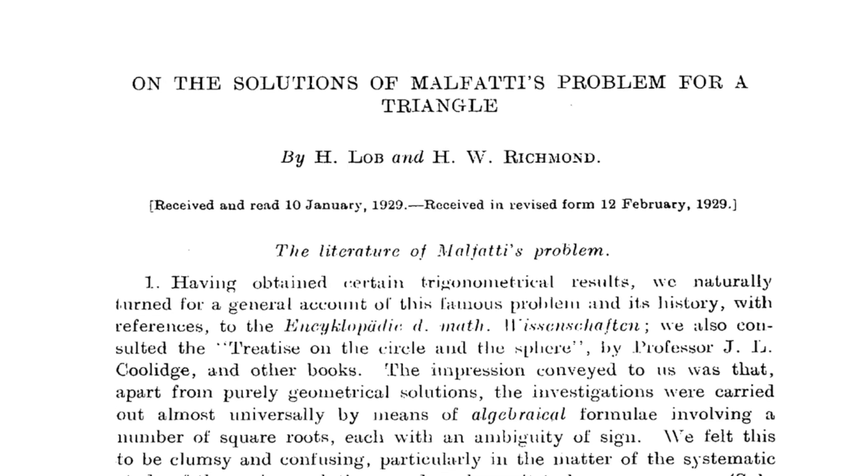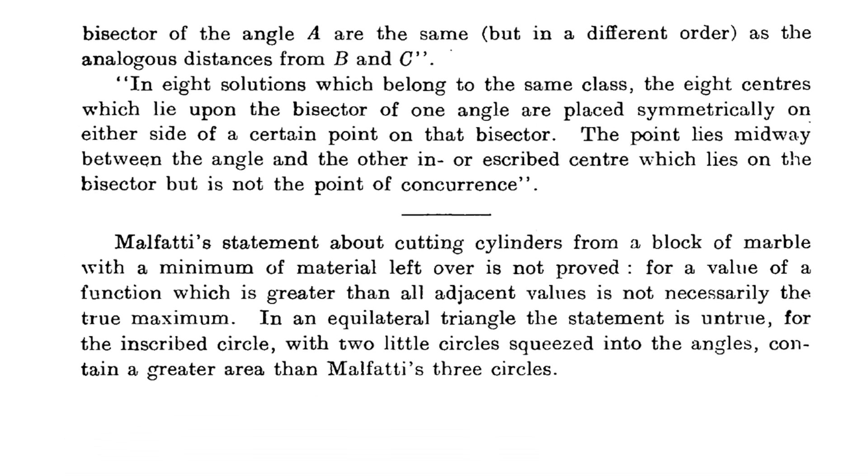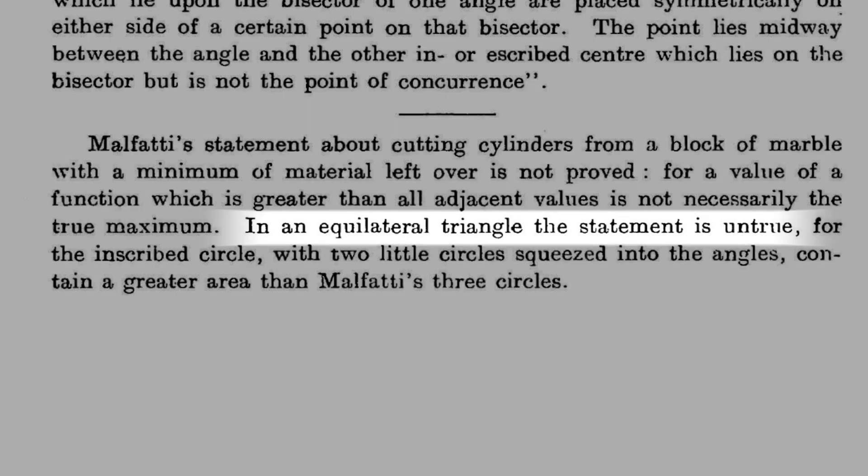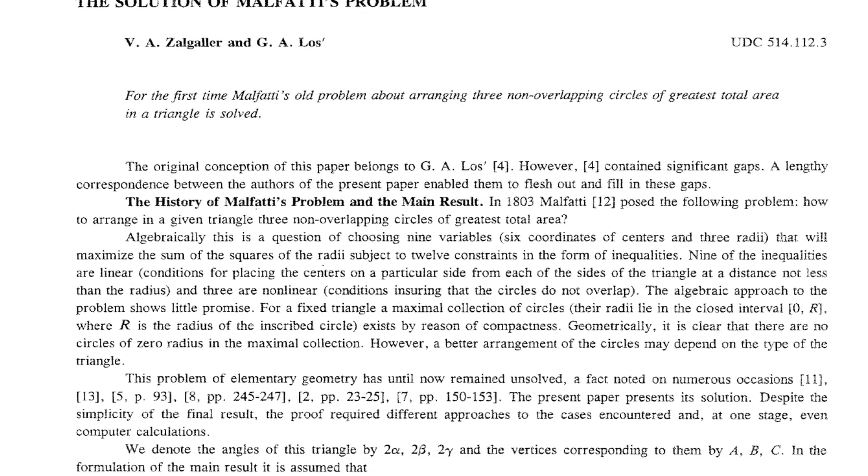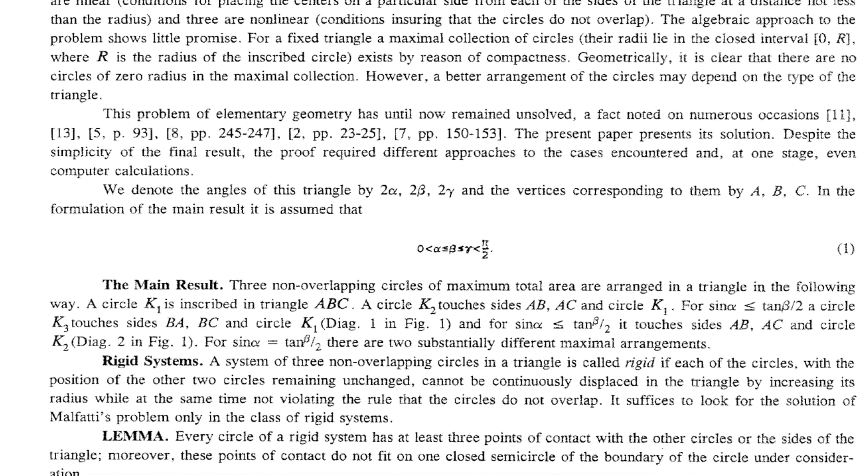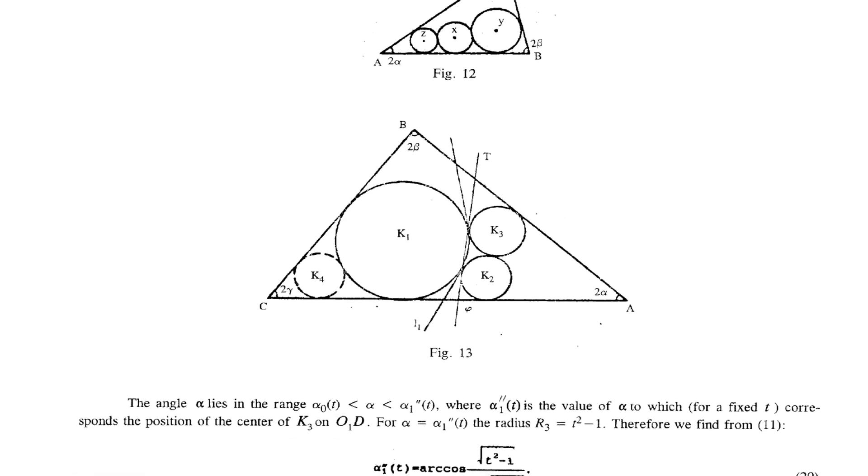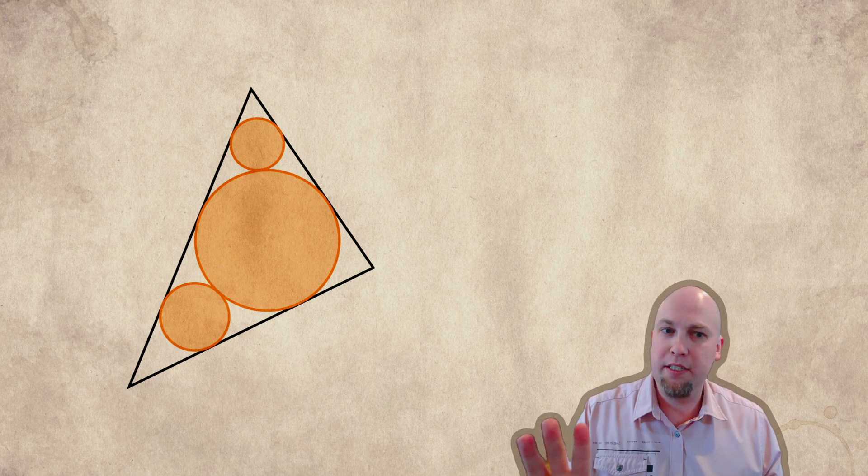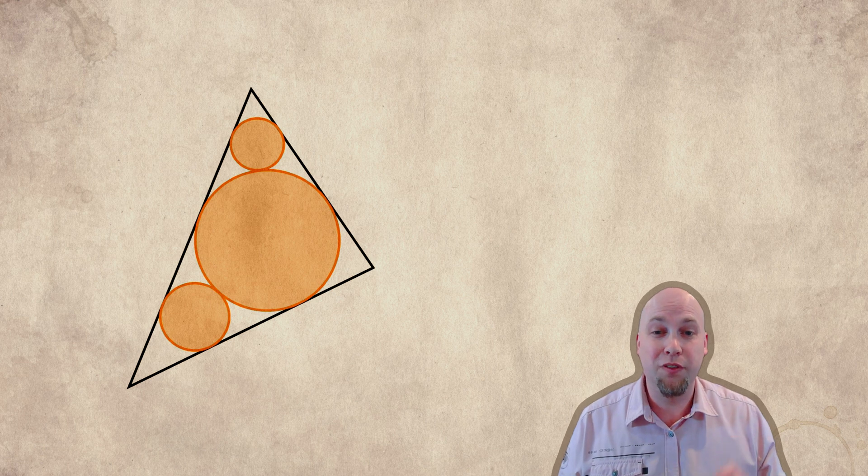It wasn't until 1930 when Loeb and Richmond showed that no, actually, the greedy solution does better. It still wasn't known that the greedy solution was optimal though, so we still didn't have a solution to this problem. Then finally, 30 years ago, in 1994, Zalgaller and Loos wrote a paper where they solved this problem and showed that yes, this greedy algorithm actually is optimal regardless of what your triangle is. If you have three circles you want to put in a triangle, you want them to cover the largest area possible, greedy algorithm is what you do. But we didn't know this until just 30 years ago.